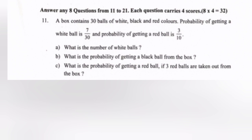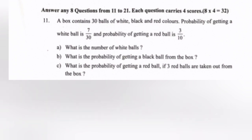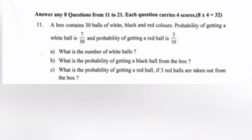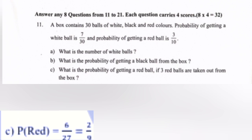Question 11: A box contains 30 balls of white, black, and red colors. Probability of getting a white ball is 7/13 and probability of getting a red ball is 3/10. Part a: Number of white balls is 7. Part b: Probability of getting a black ball is 14/13, that is 7/15. Part c: If three red balls are taken off, probability of red equals 6/27, that is 2/9.